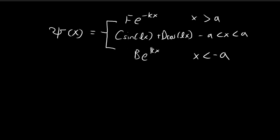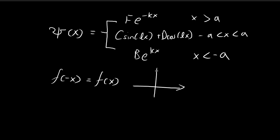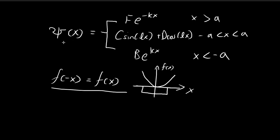This is what we left off in the last video. Now we're going to use the fact from problem 2.1 that if your potential is an even function, then we can always take ψ(x) to be either an even or odd function. An even function satisfies f(-x) = f(x), meaning it is symmetrical about the central vertical axis. Because our potential is an even function and is symmetrical about the central axis, we know ψ(x) can be taken as even or odd.